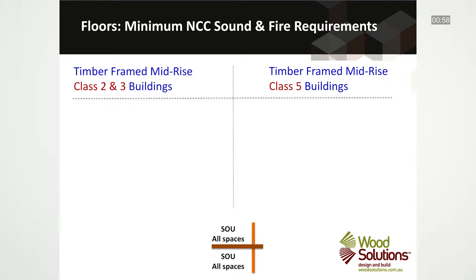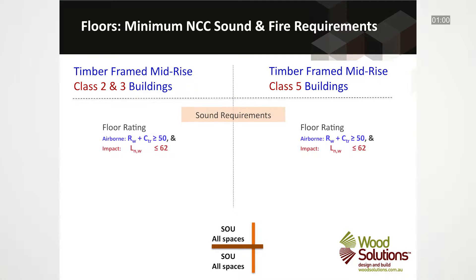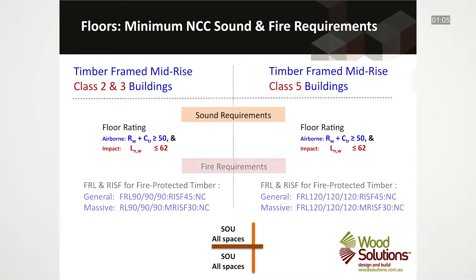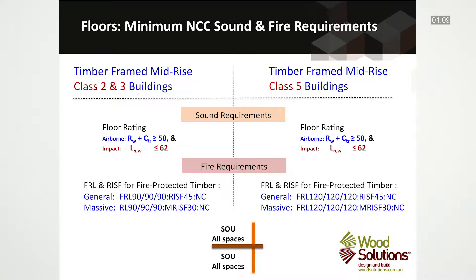The minimum NCC sound and fire requirements for floors are as follows. For Class 2 and 3 residential buildings and Class 5 office buildings, an airborne sound rating greater than 50 and an impact sound rating less than 62. An FRL of 90-90-90 for Class 2 and 3 residential buildings for both general and massive systems, and for Class 5 office buildings, an FRL of 120-120-120 for both general and massive systems.